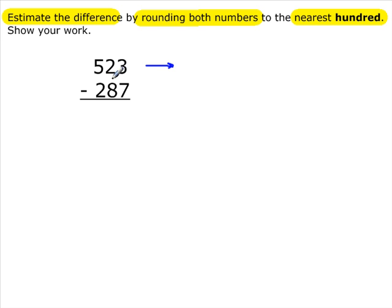Well, 523 is only 23 away from 500, but a lot more, about 80 away from 600. So, because of that we're going to round 523 to 500.